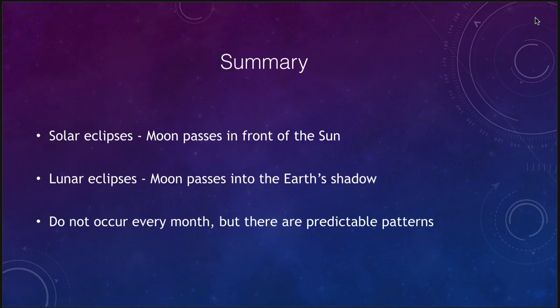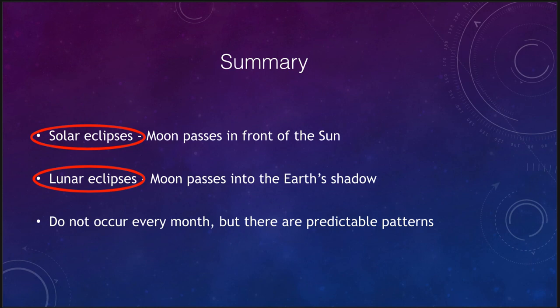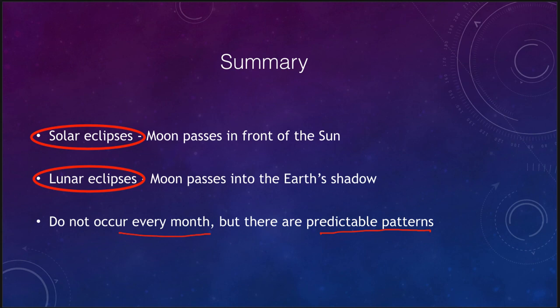To summarize: we've talked about two types of eclipses — solar eclipses, where the moon passes in front of the sun and blocks its light, and lunar eclipses, where the moon passes into the earth's shadow. Eclipses do not occur every month, but there are predictable patterns, so astronomers can easily tell you when the next eclipse will occur in any given area. That concludes our discussion of eclipses. Until next time, have a great day everyone, and I will see you in class.